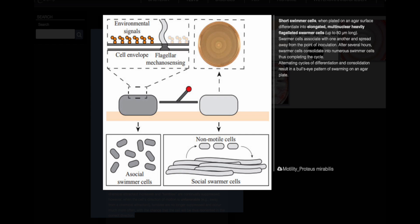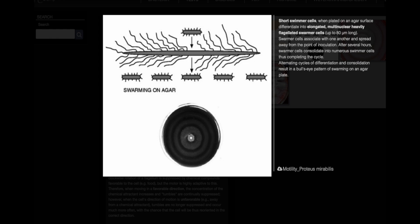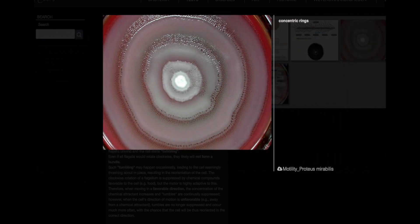Proteus mirabilis morphology and swarming on agar. When short swimmer cells are plated on an agar surface, they differentiate into elongated, multinuclear, and heavily flagellated swarmer cells. These swarmer cells then associate with each other and spread away from the initial point of inoculation.